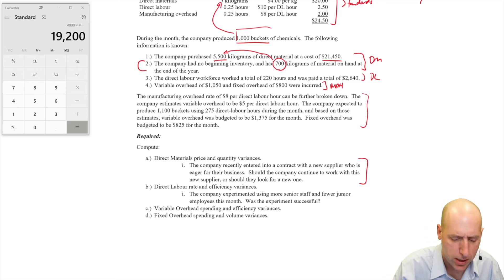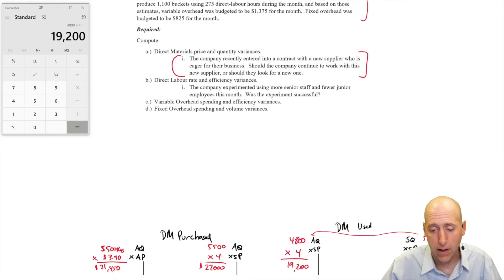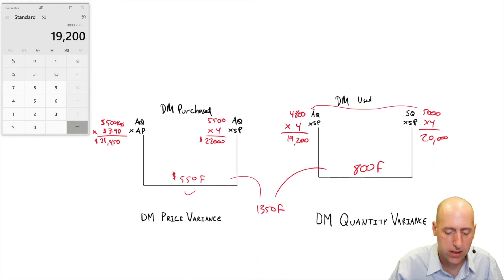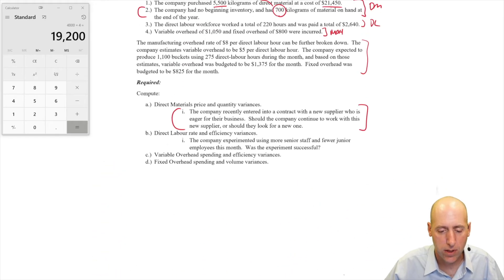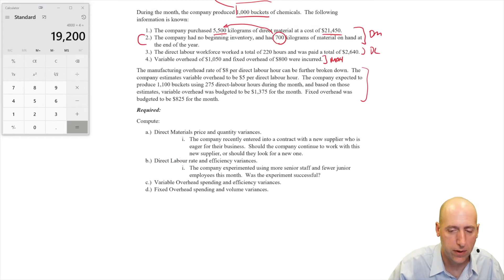Scrolling up, there's a sub-question here: the company recently entered into a contract with a new supplier who is eager for their business. Should the company continue to work with this new supplier or should they look for a new one? This seems great to me. Not only did they save me money, but apparently I used their material more efficiently. Maybe it's a higher quality material. I would absolutely stick with this supplier. Very favorable variances.